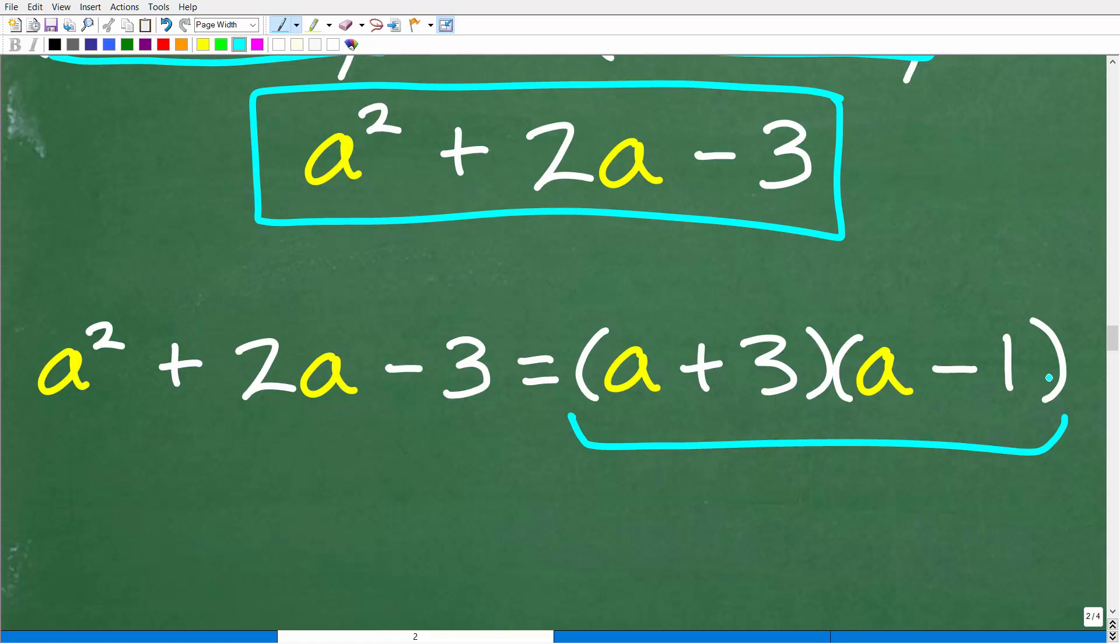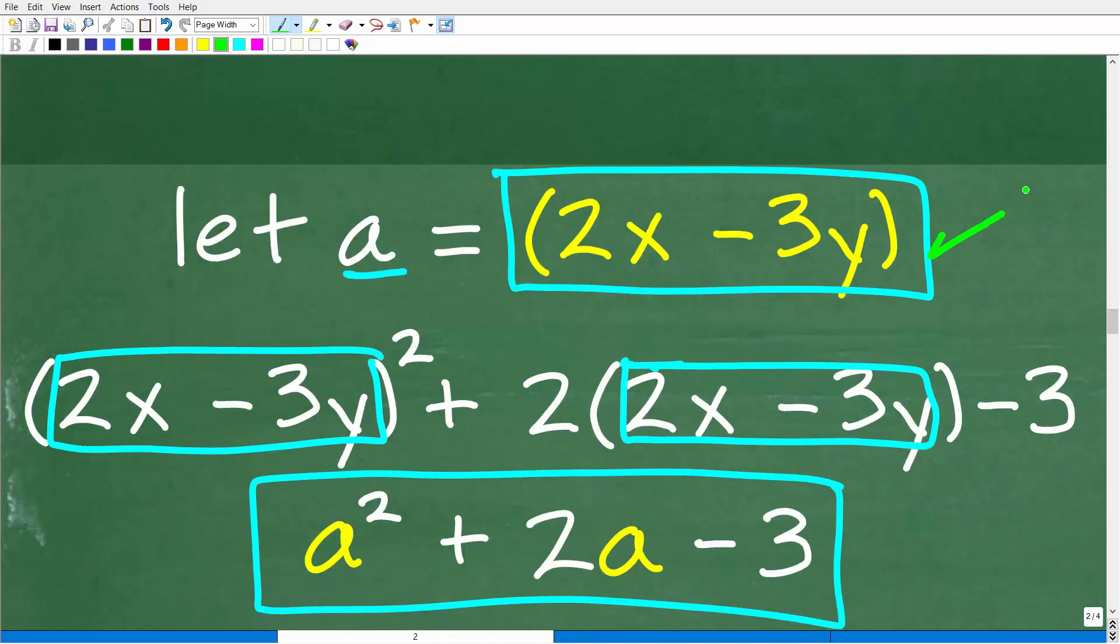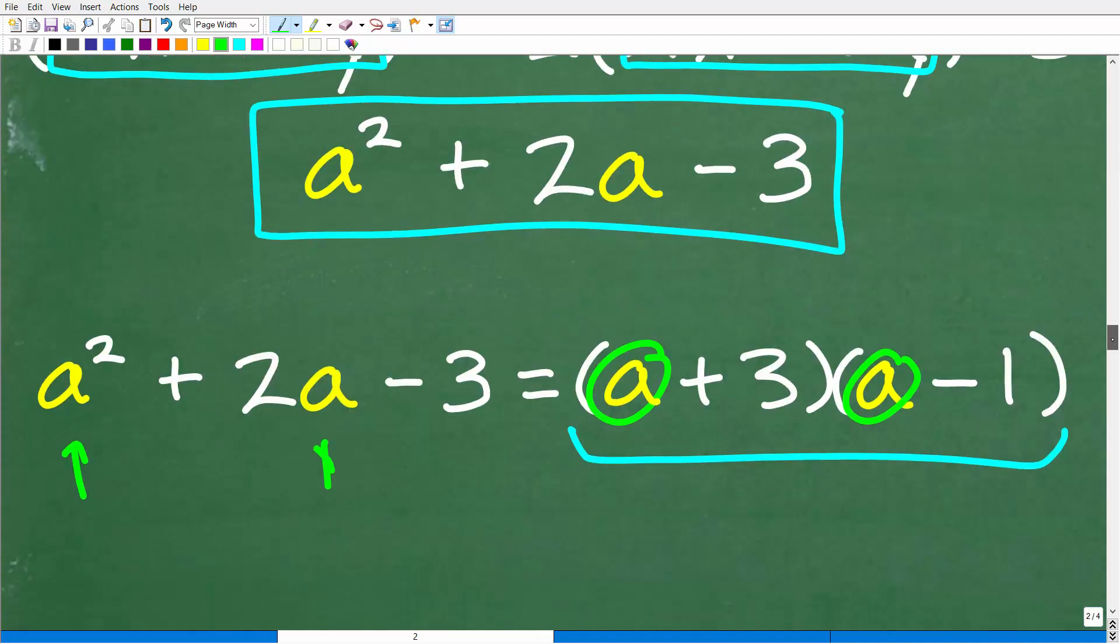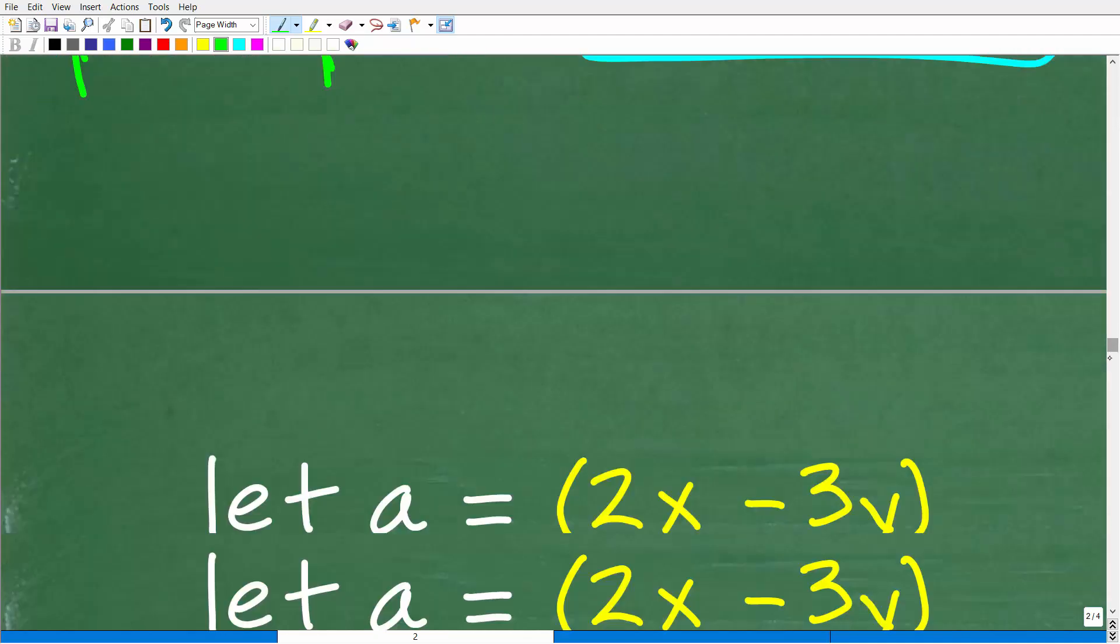So a squared plus 2a minus 3 is factorable into these two binomials, a plus 3 times a minus 1. And now, hopefully, you're like, yes, yes, I see what you're going to do, Mr. YouTube Math, man. Now that we're able to factor this thing with a, I can plug back in for these a's right there. We can plug this back in and finish this problem up. And you're absolutely right. So let's go ahead and finish that up.